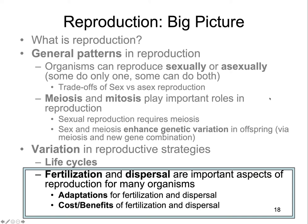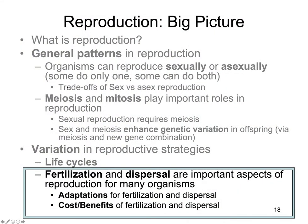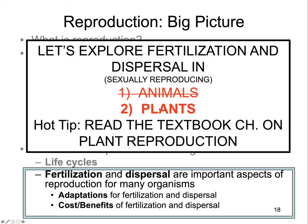To this point we've been talking about reproduction. We've defined what reproduction is, some of the general patterns in reproduction. We talked about the role of mitosis and meiosis in reproduction, and we've begun talking about some of the variation in reproductive life strategies and life cycles. The last lecture was about the importance of fertilization and dispersal in animals, and now we're going to move on to talk about that in plants.